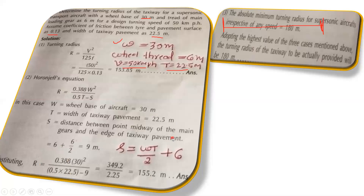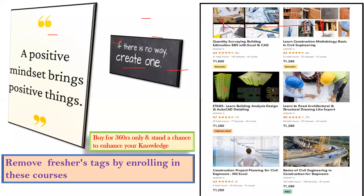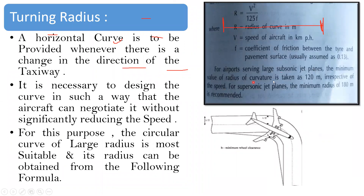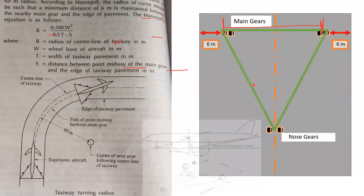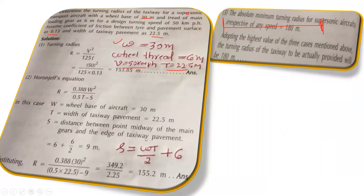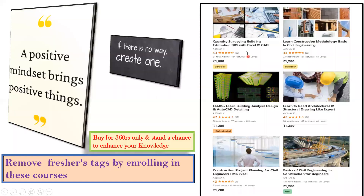Out of the two calculated values, 155.2 m is the maximum. However, for a supersonic aircraft the minimum prescribed radius is 180 meters. Since both 153.85 m and 155.2 m are less than 180 m, we must adopt 180 meters. Therefore, adopting the highest value of the three cases — 153.85, 155.2, and 180 — the turning radius of the taxiway to be provided is 180 meters.